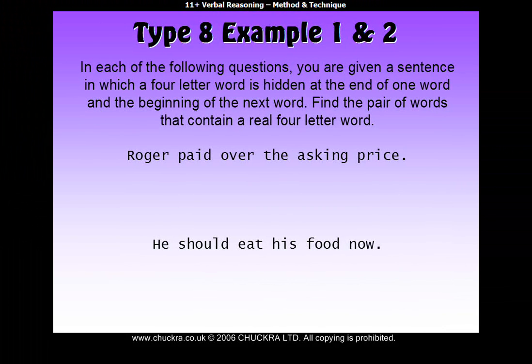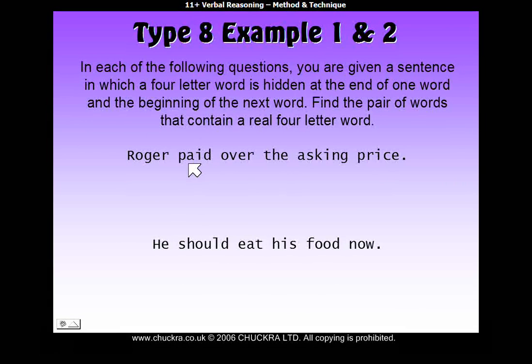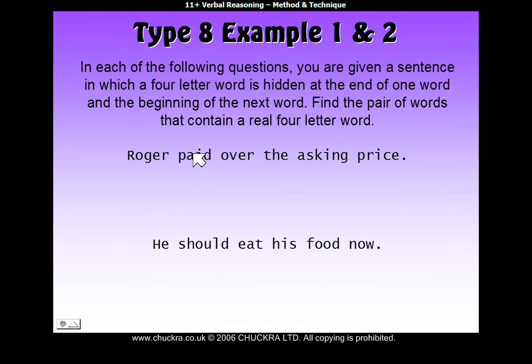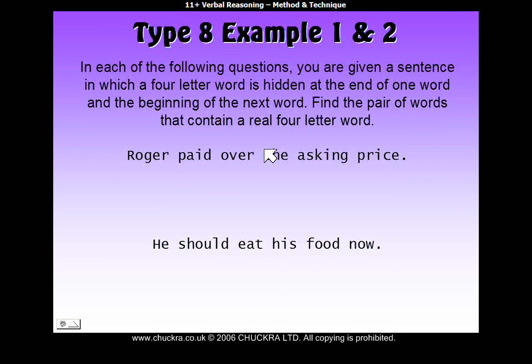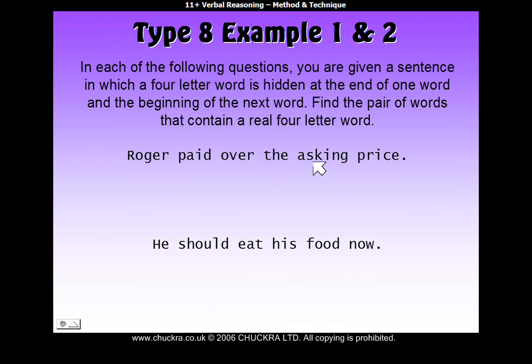Example one is this sentence up here which is Roger paid over the asking price, and what they're saying is that somewhere there is a four-letter word hidden, and the reason it's hidden is because it's made up of some of the letters from one word and some of the letters of the next one. So it could be between each pair of words: between Roger and paid, paid and over, over and the, the and asking, or asking and price, and we've got to find out where it is.